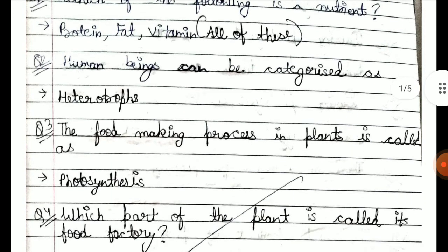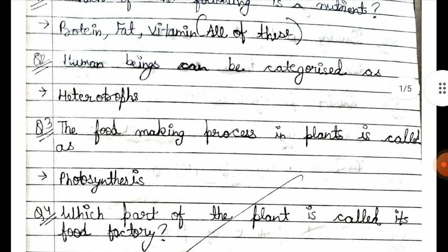The food-making process in plants is called what? When plants make food, what do we call it? We call it photosynthesis.